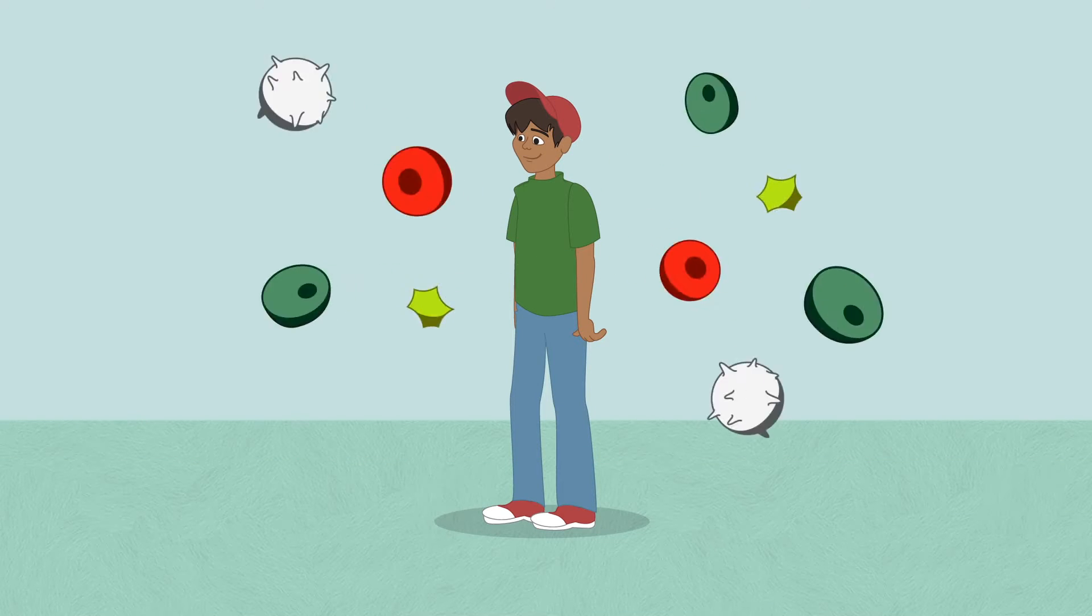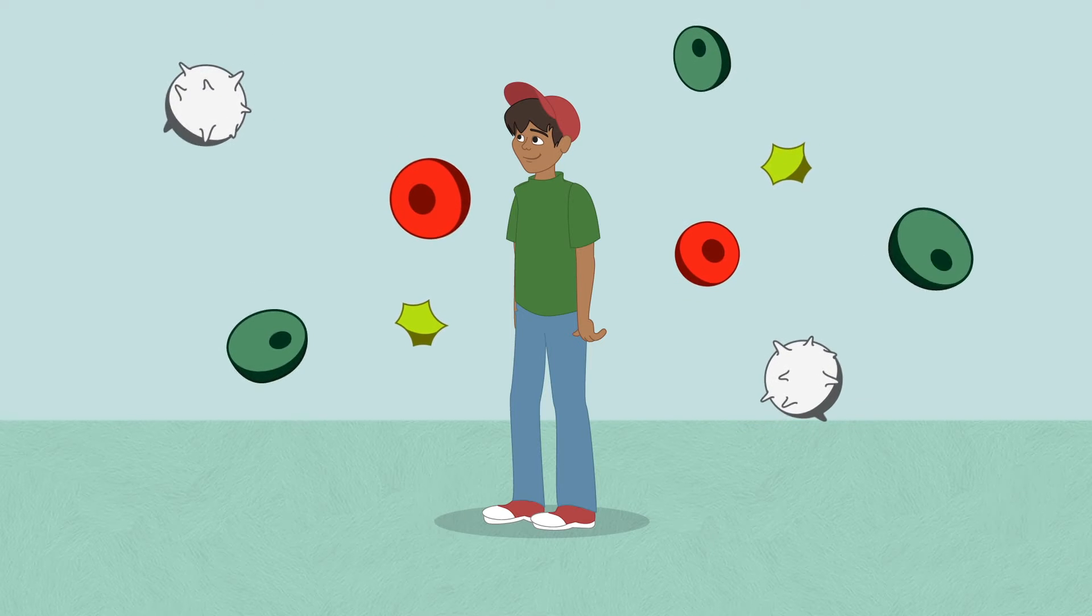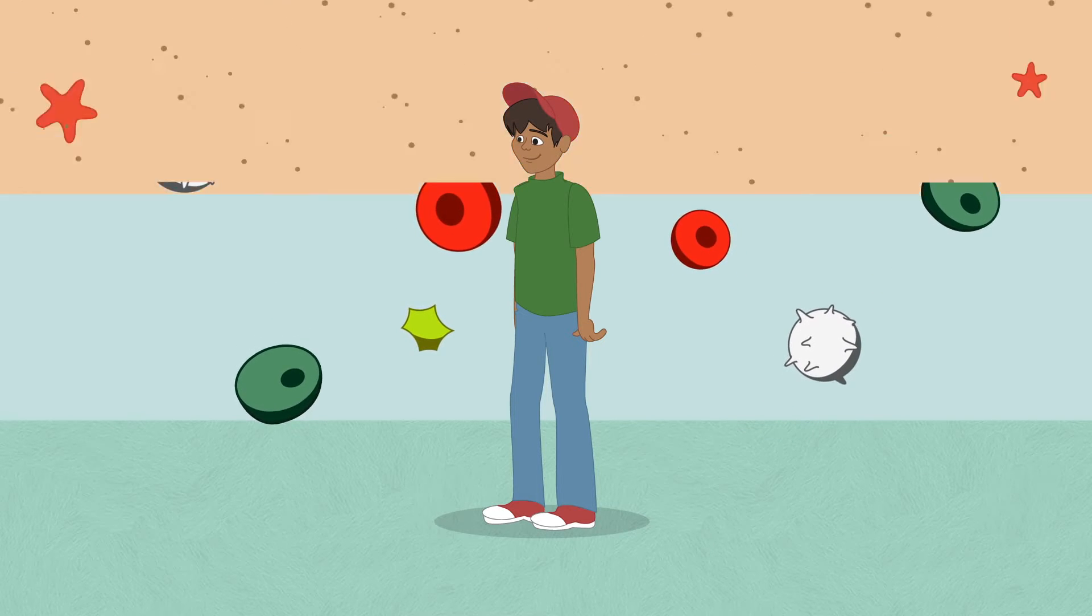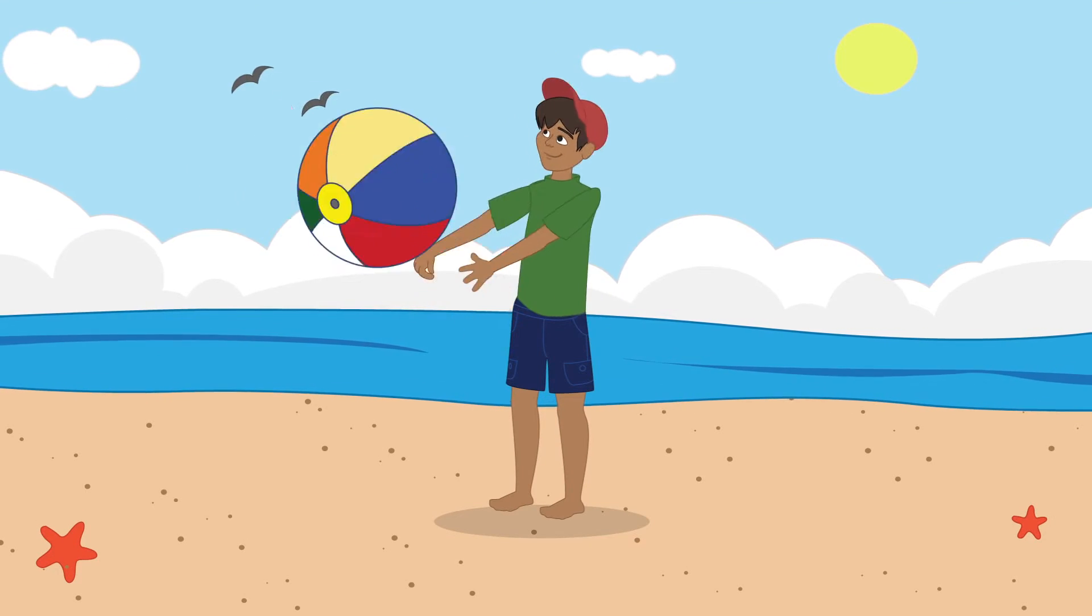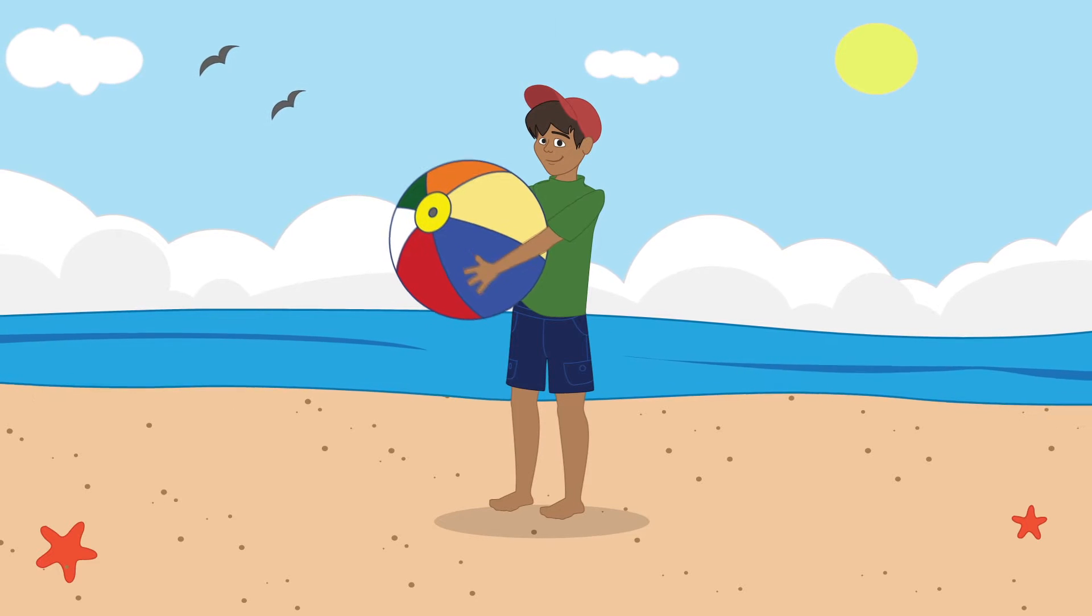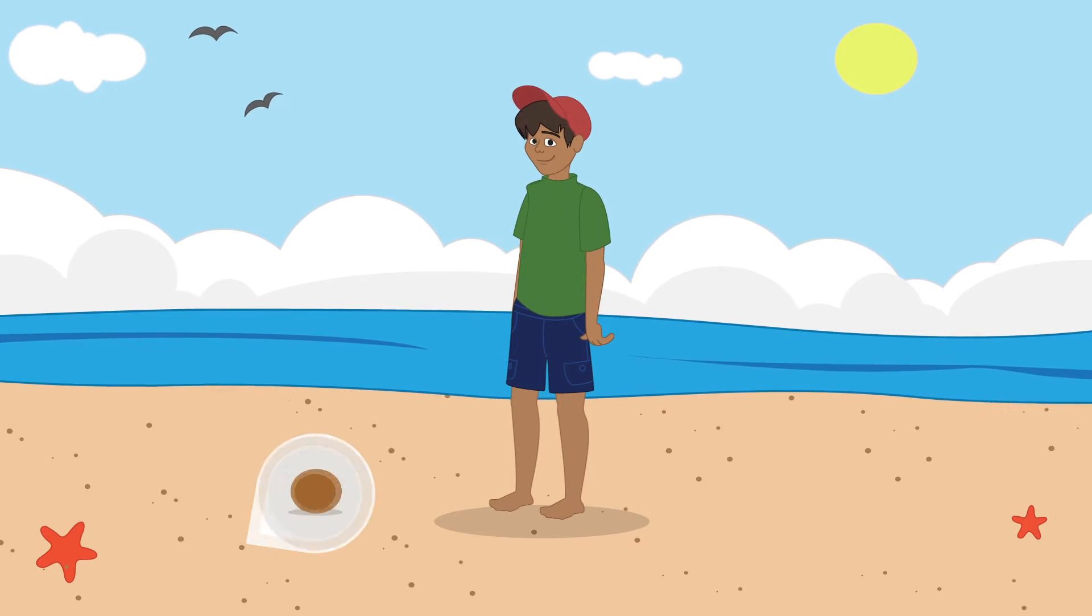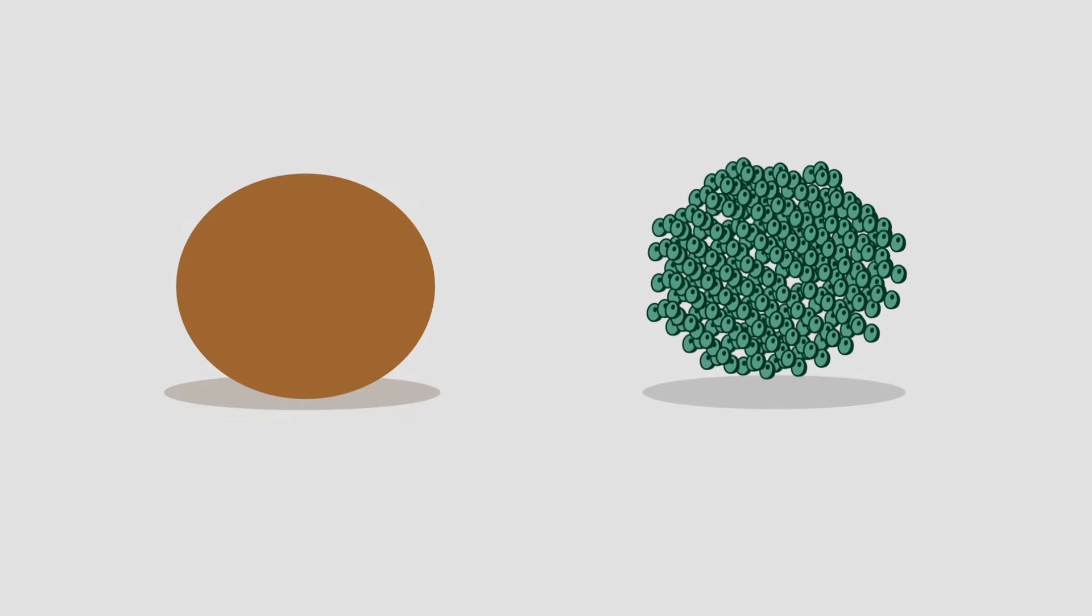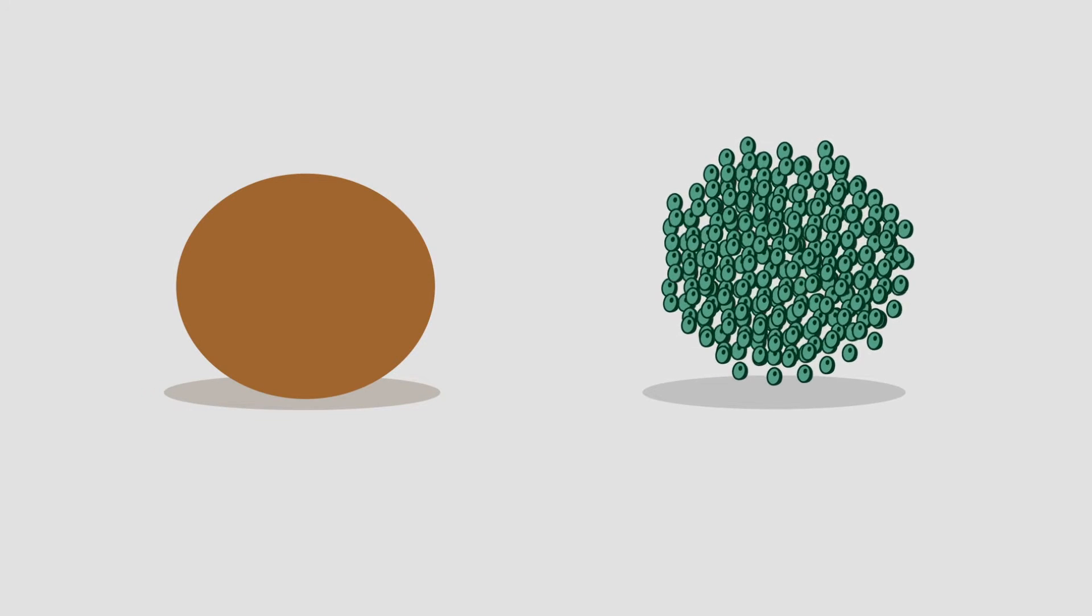Our bodies are made up of trillions of tiny little things called cells. That's more than the grains of sand on a small beach. Actually, cells are even smaller than grains of sand. A million cells can be the size of one grain of sand.